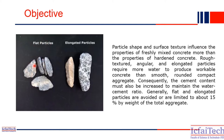In this experiment we will find out how to calculate the flakiness index — basically how to find the percentage of flat particles — and how to find the percentage of elongated particles. If the percentage of flakiness of a material is more than 15% of the total aggregate, then we should not use that type of aggregate for construction. So before using aggregate, we perform this experiment and check whether the flakiness and elongation index values are less than 15%.